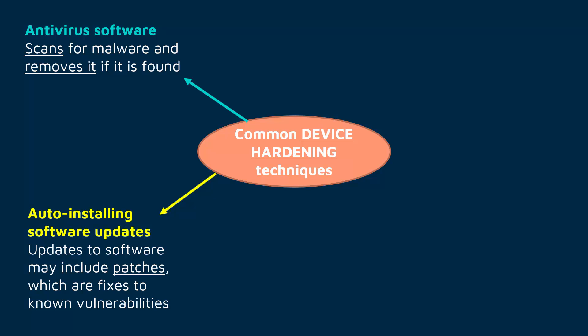Installing updates is really important for all types of software — your operating system is a big one, and also general applications — but it's especially important for antivirus software, because antivirus software works by maintaining a database of all malware the company knows about. It's really important you are downloading updates because those updates will include updates to the database. New malware is developed every single day, in slightly different ways, because patches are making older versions not work anymore. Malware developers have to innovate, so if you are not installing updates to antivirus software, how is it meant to know about the latest malware? It's not — so it's really important they're kept updated.